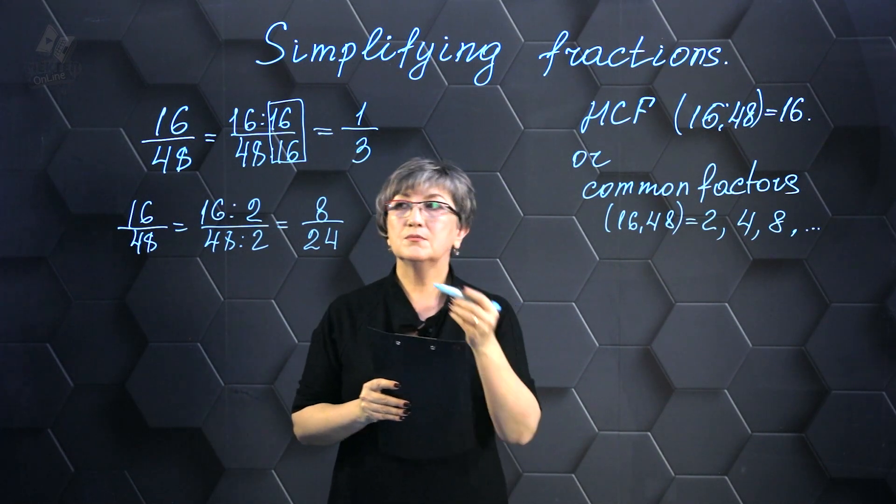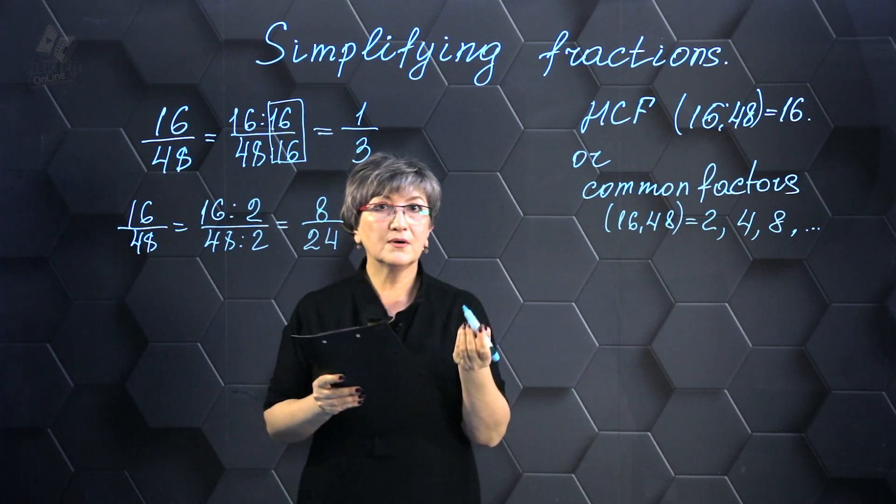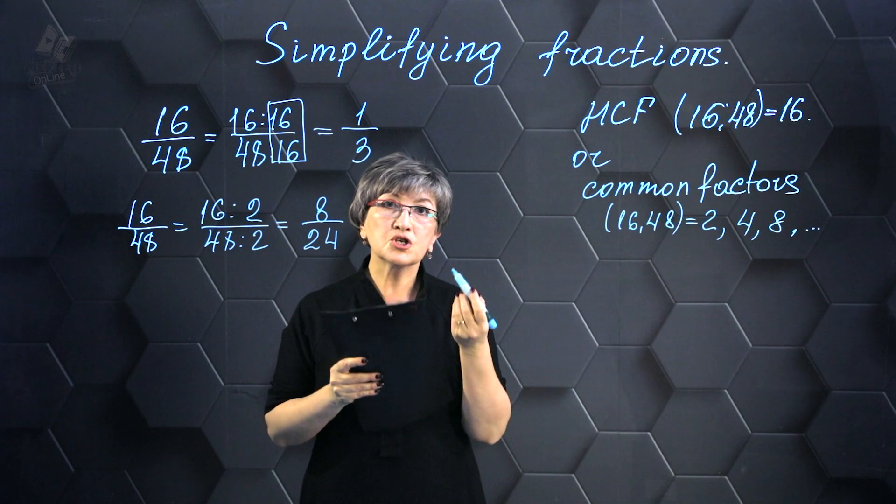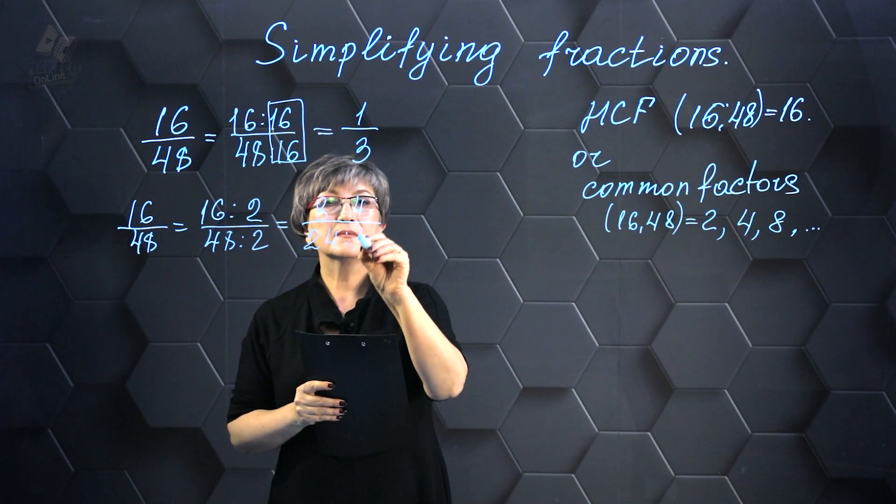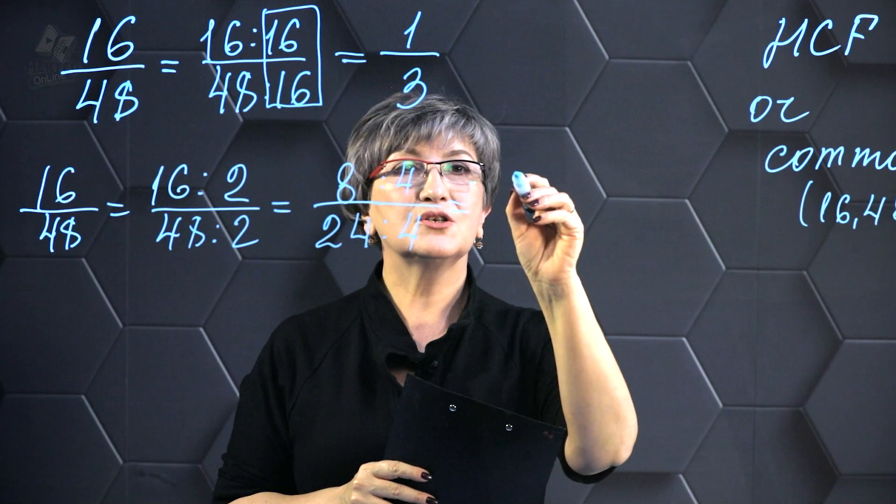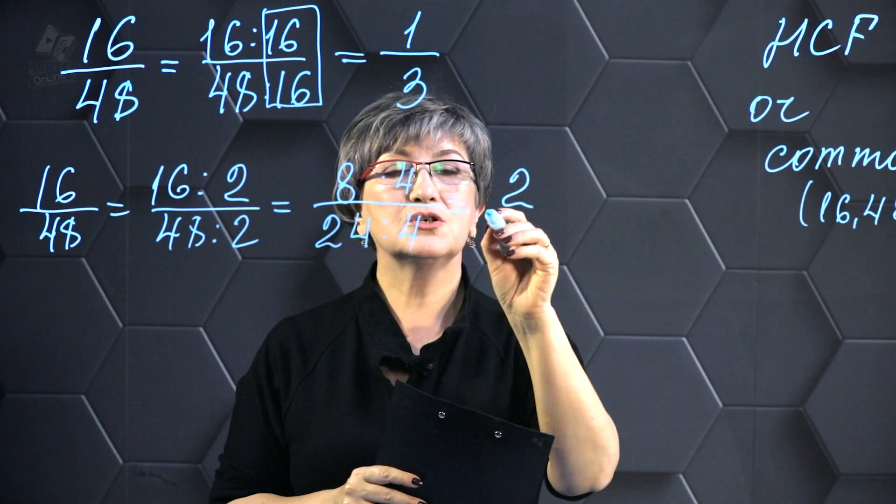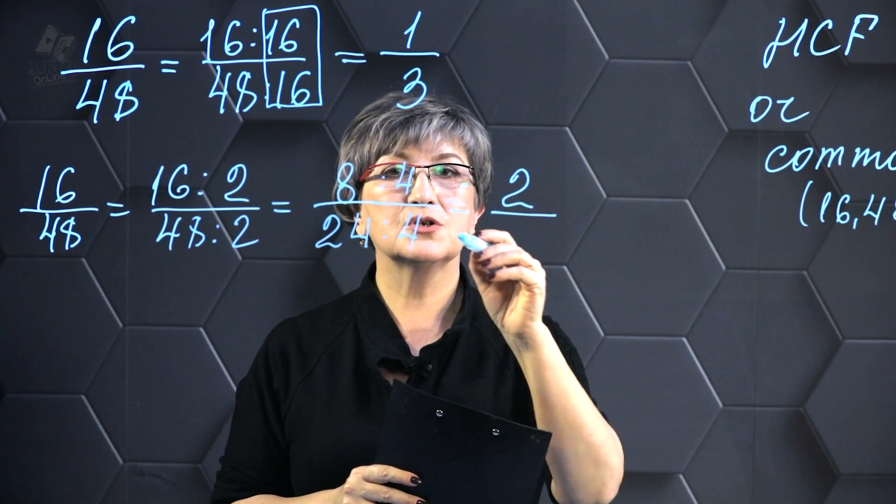We can continue to further divide. We can also divide by 2 but we can also divide by 4. We have multiple options for division. The division of 8 by 4 results in 2, and the division of 24 by 4 yields 6.